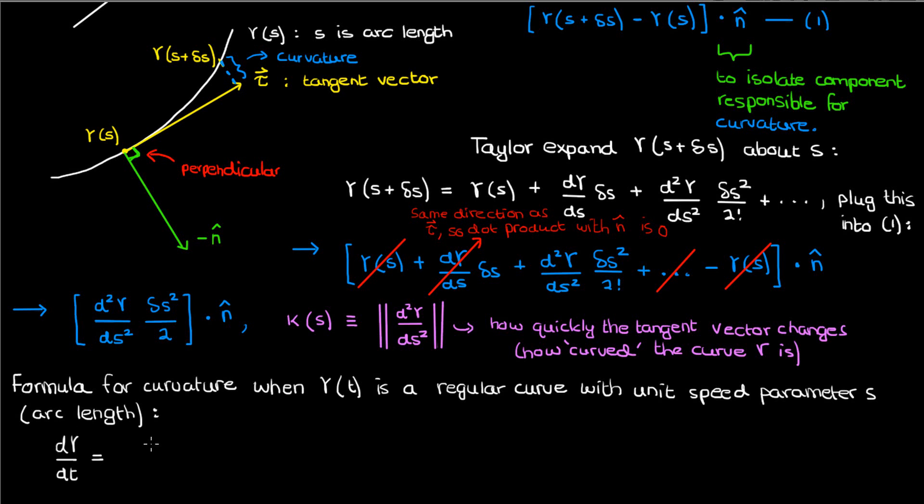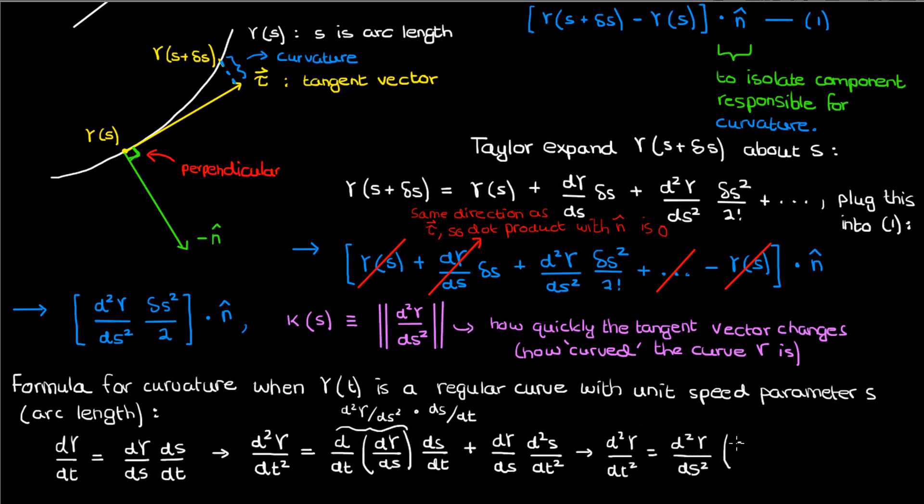We'll start with the first derivative of gamma with respect to t which we can write as d gamma by ds times ds by dt using the chain rule. Let's now take the second derivative of gamma with respect to t. By the product rule now we'll take the t derivative of d gamma by ds, multiply by ds by dt, and then add d gamma by ds times the t derivative of ds by dt which is just the second derivative of s with respect to t. Since d gamma by ds is just a function of s which itself is a function of t, the t derivative of d gamma by ds can be written as d² gamma by ds² times ds by dt according to the chain rule. As a result, the second derivative of gamma with respect to t can be expressed as the following.